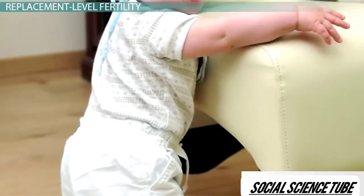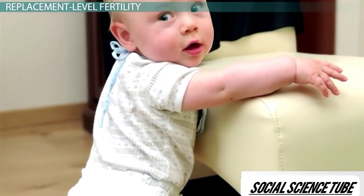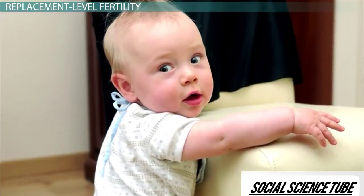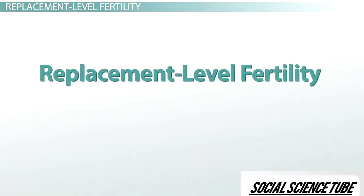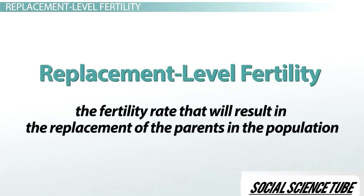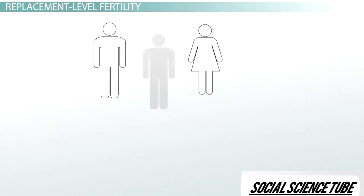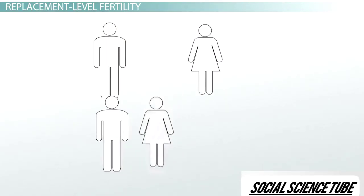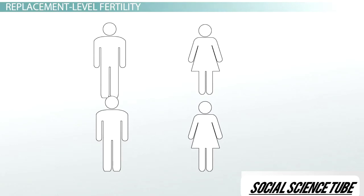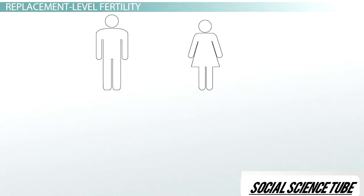Another important population characteristic that relates to births is replacement-level fertility. Replacement-level fertility is the fertility rate that will result in the replacement of the parents in the population. In an ideal world, the human replacement-level fertility rate would be exactly 2, meaning each couple would produce 2 offspring to replace them, and the human population would stay at a stable rate.